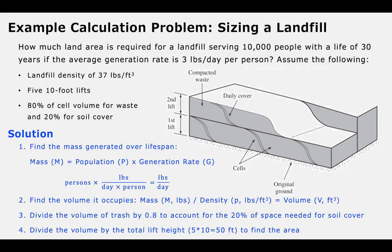To get the solution to this problem, we need to follow this approach. The first step is to find the mass that's generated over the lifespan of the landfill. We're going to use our design population and our generation rate, multiplying the number of people by pounds per person per day. That gives us pounds of waste produced per day. We then calculate the total pounds of waste produced over the 30-year life of the landfill by multiplying by 365 days per year and 30 years.